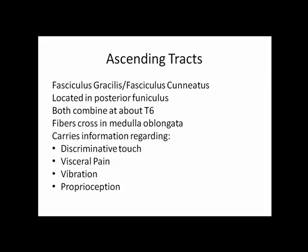Discriminative touch refers to the ability to detect two separate points of contact when touched simultaneously. You can think of it in a clinical context as touch sensitivity. Visceral pain is, of course, organ pain. Vibration is self-explanatory. And proprioception has to do with joint position in space.